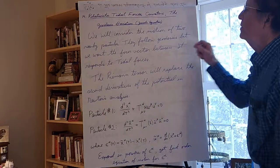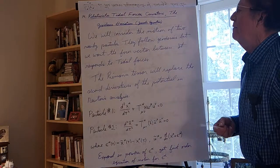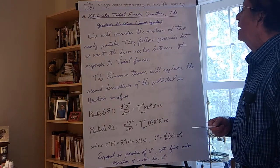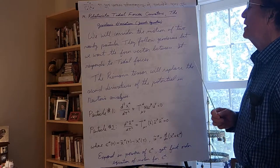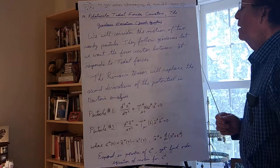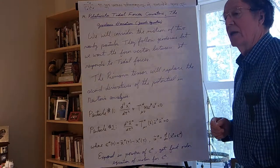So we'll consider the motion of two nearby particles. They're in a curved space-time and they're not subject to any external forces. They both follow geodesics, but we want the four-vector between them. We're going to see that it responds to tidal forces.